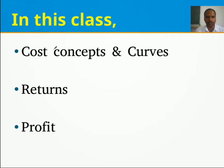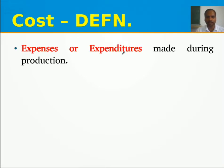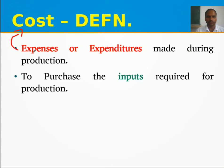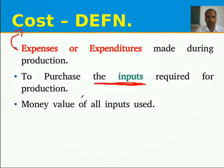We are going to see two concepts: cost concepts and curves, returns, and profit. Cost minus returns will give the profit of the production. The cost is nothing but the expenses or expenditures made during the production. The money value of all inputs used is called the cost.